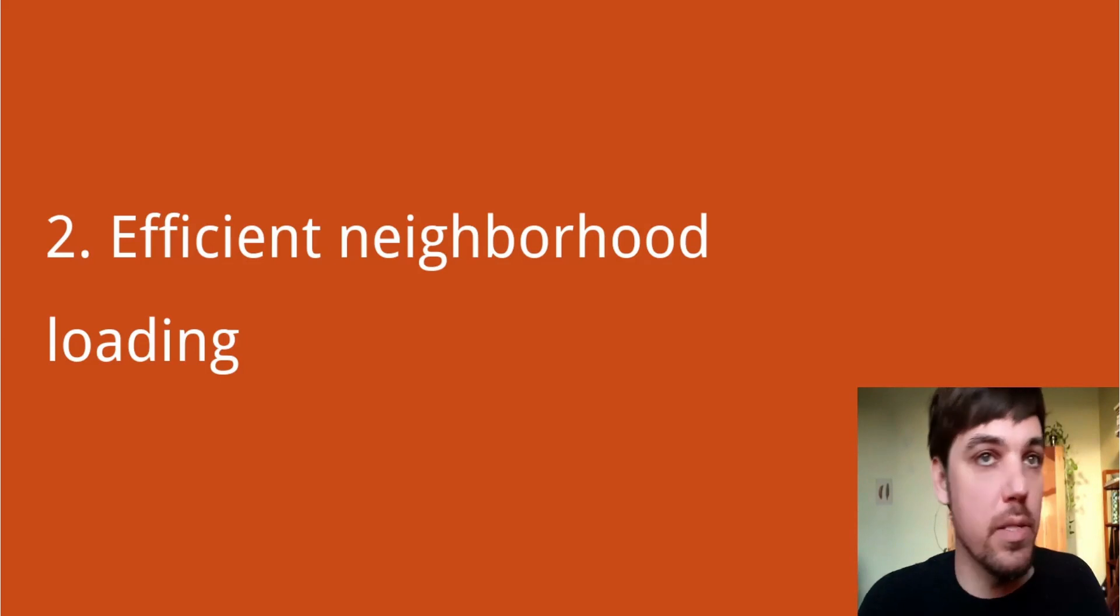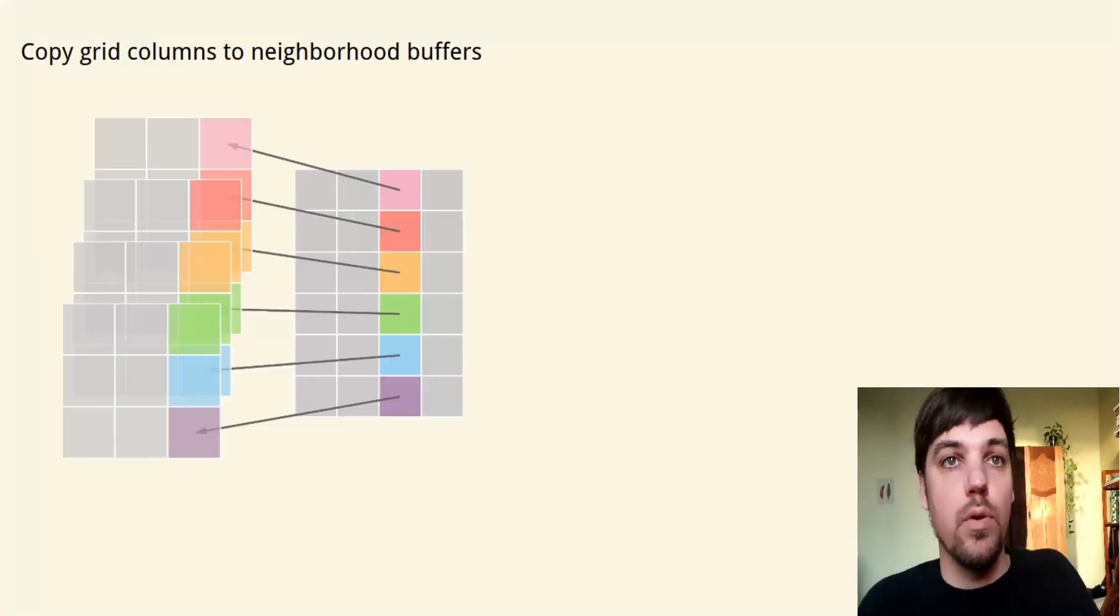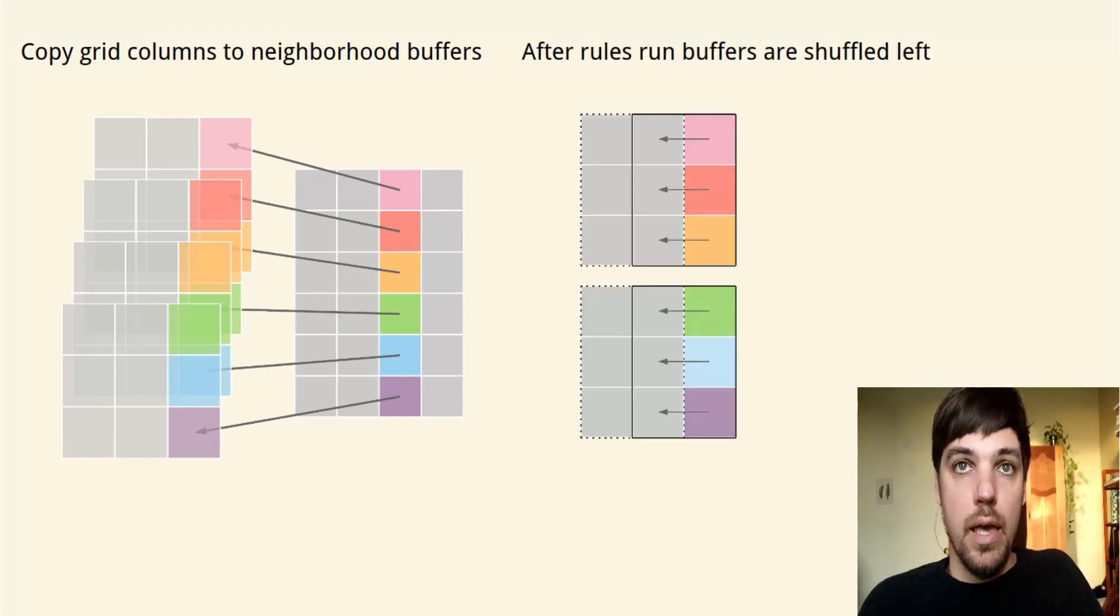The next optimization is efficient neighborhood loading. We do this by, instead of loading the whole neighborhood for every cell, we load a small column at a time of the main grid and copy that to multiple neighborhood buffers. We then run the rule on those buffers.